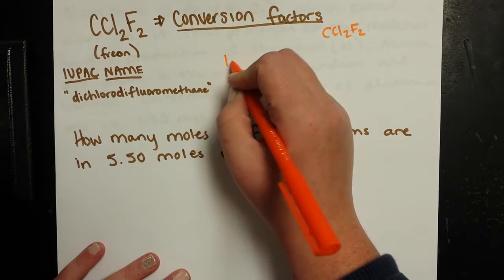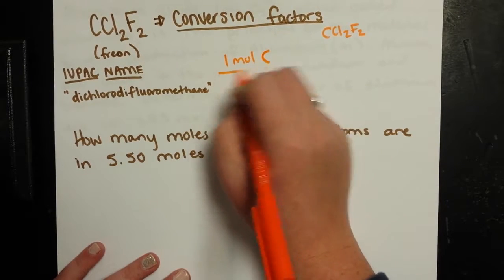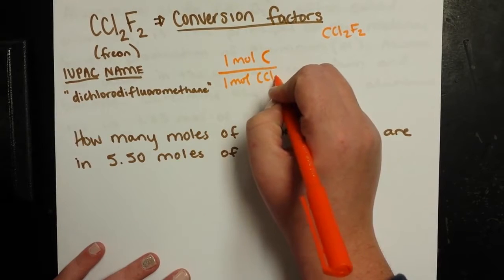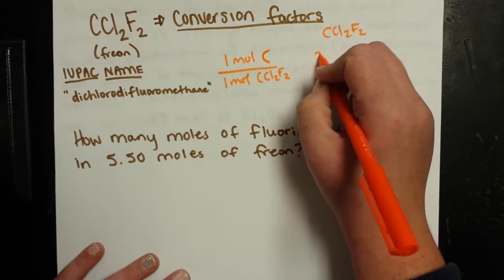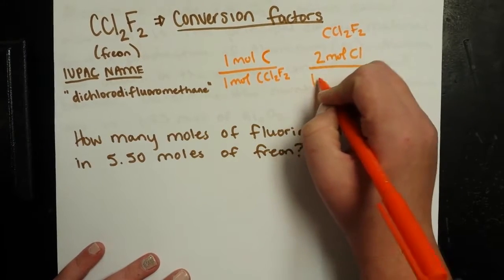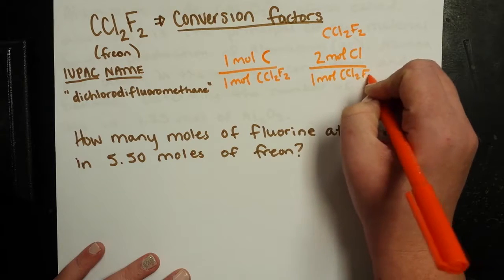So we can write conversion factors, saying like one mole of carbon for every one mole of Freon. We also have two moles of chlorine for every one mole of Freon. And I'm getting this from that formula.